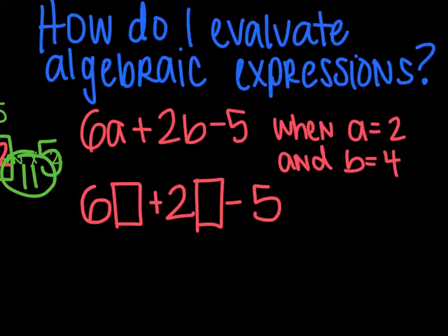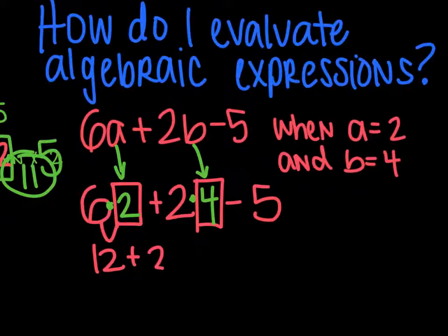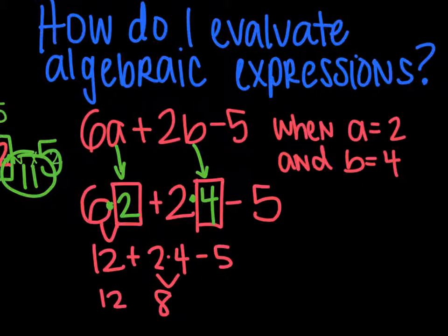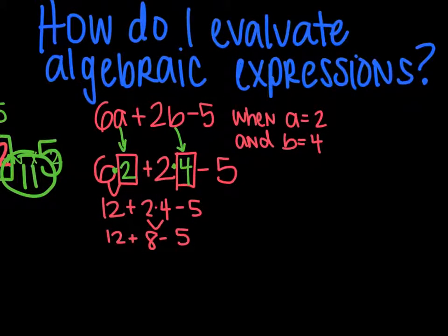My a is 2. So in the a spot I'm going to put a 2. Remember that's multiplication. And in the b spot I'm going to put the number 4. Again, multiplication. Now I follow order of operations. So 6 times 2 is 12 plus 2 times 4 minus 5. 2 times 4 is 8. Drop down everything I haven't used. And then 12 plus 8 is 20 minus 5 would be 15 for a final answer.